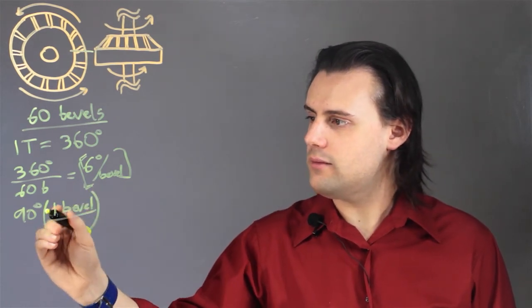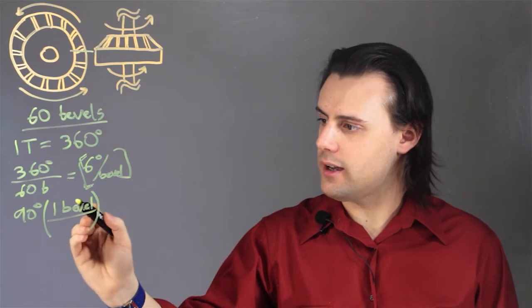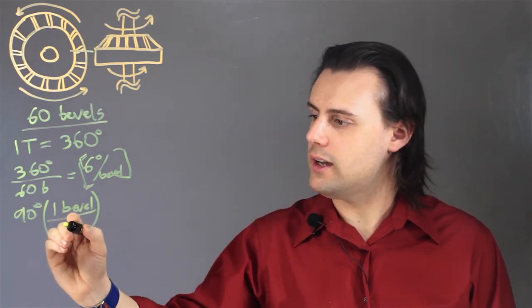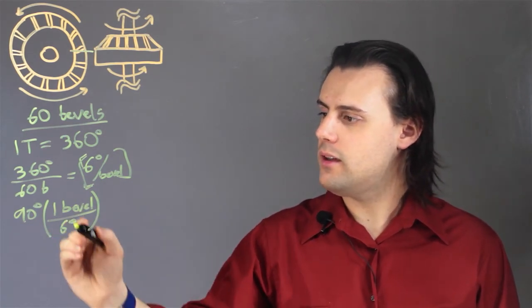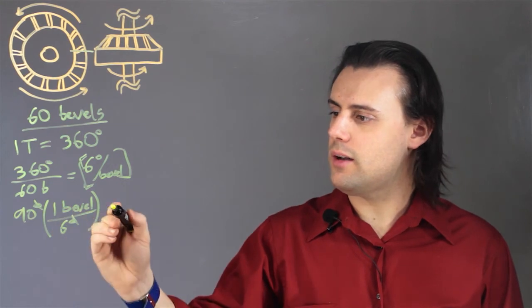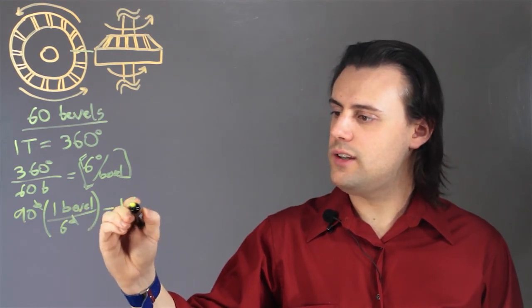By dividing by my conversion, I'm multiplying by 1 bevel and dividing by 6 degrees. The degrees cancel out and I'm left with 15 bevels.